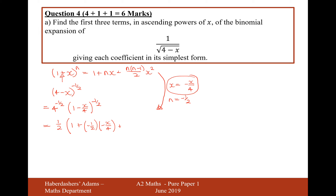Moving on to the third term: it starts with n, which is minus a half, then n minus 1, which is minus a half take away 1 = minus 3/2, divided by 2, multiplied by x squared. Here x corresponds to minus x/4, so it's (minus x/4) squared.